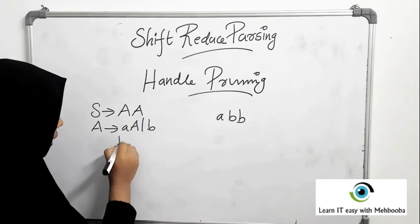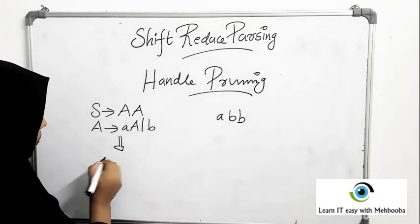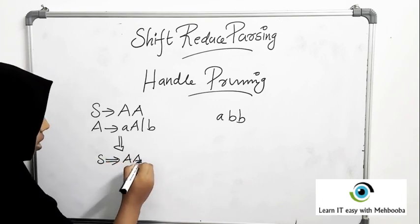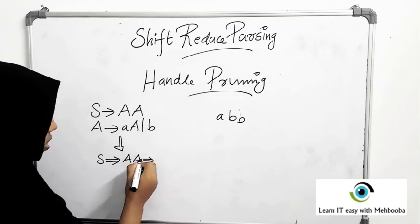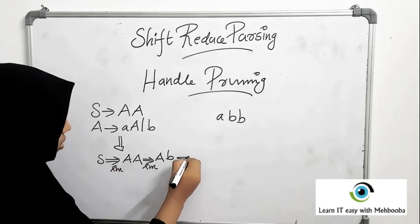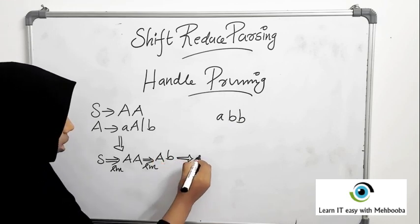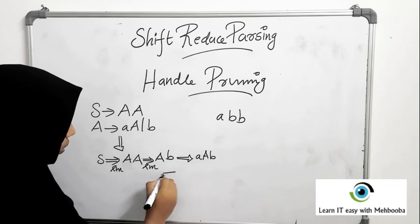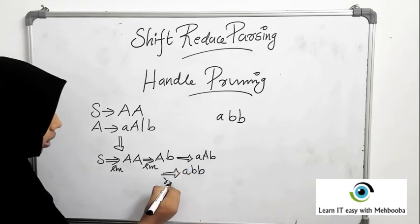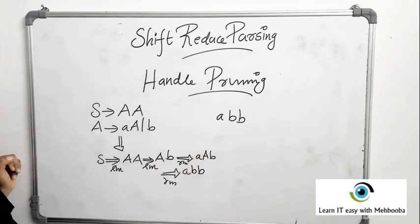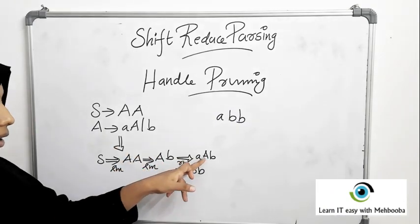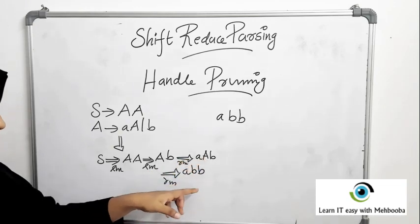For example, if you want to derive a b b using rightmost derivation from this grammar, you should derive a from S, then from A A you substitute for this A as b, because we are following rightmost derivation. Now the first A can be replaced by A A b, then that A can be replaced by b again. So this is how you get a b b using rightmost derivation.